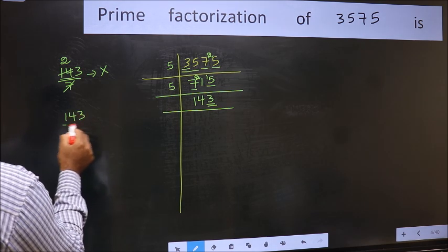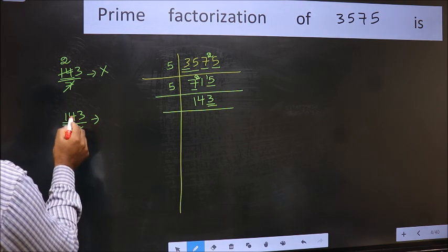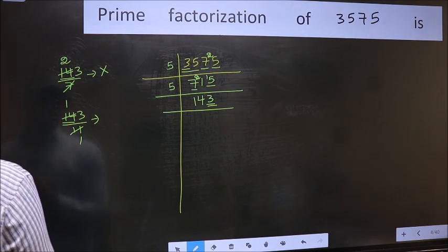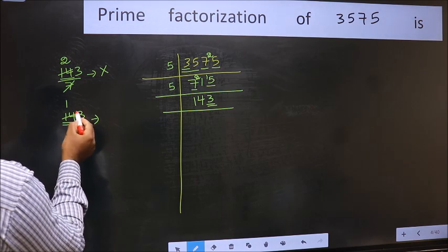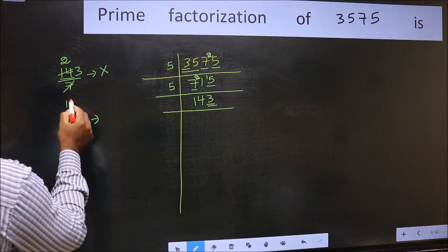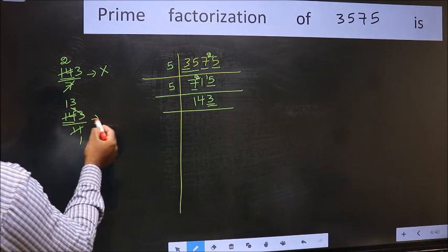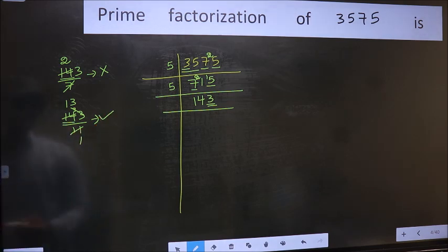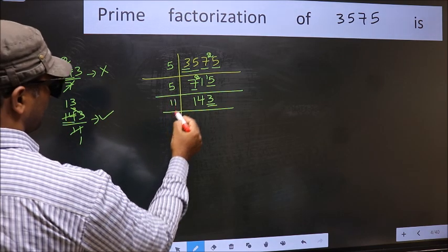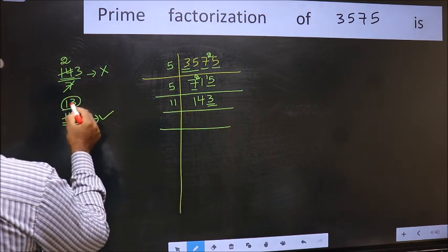11. Next, prime number 11. A number close to 14 in the 11 table is 11 times 1 is 11. 14 minus 11 is 3. Carry it forward 33. When do we get 33 in the 11 table? 11 times 3 is 33. No number has been left out, so this is divisible by 11. So 11 here, and here we should write this number 13.